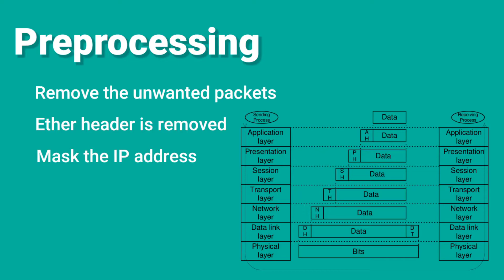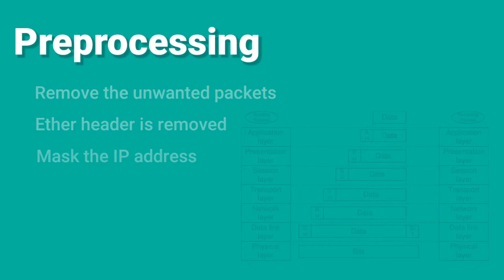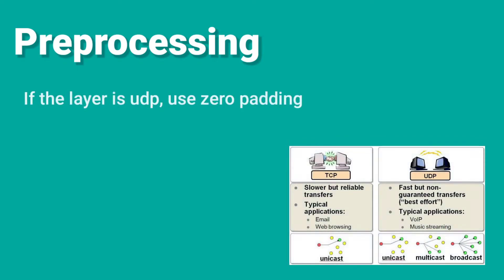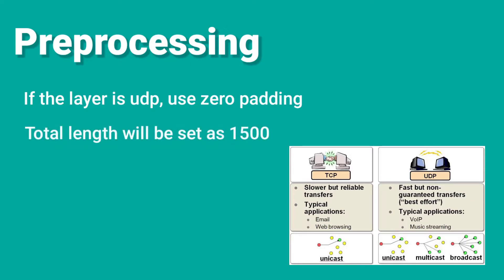This header is also removed from each packet. Then we have to mask the IP address to prevent pattern recognition through the IP address. While considering the transport layer TCP and UDP, they are different in byte length. So through preprocessing, we do zero padding if the layer is UDP and convert it to 20 bytes. The total length of all packets will be padded and set as 1500 bytes. Finally, the packets are normalized.